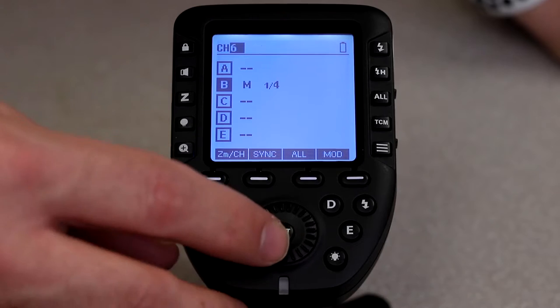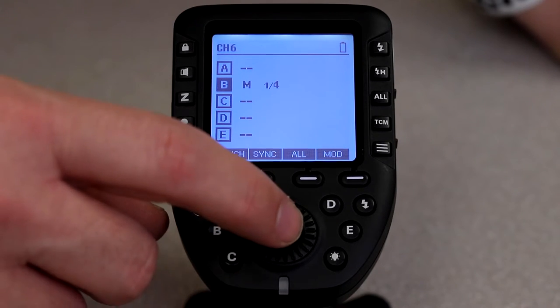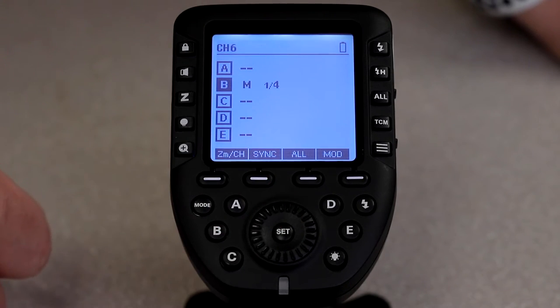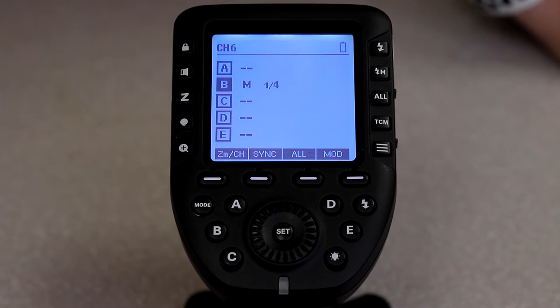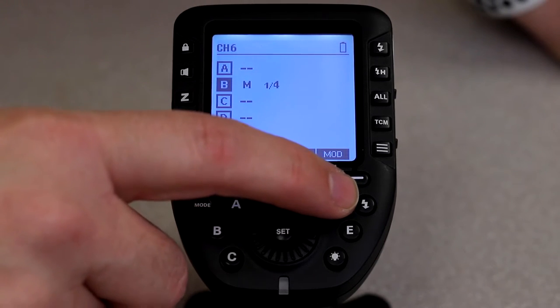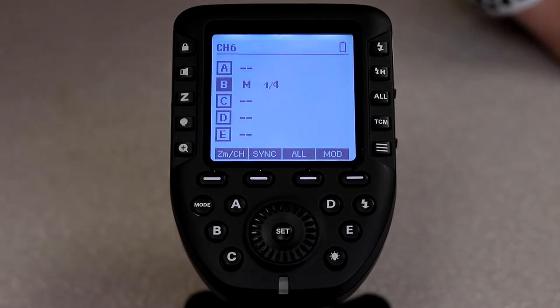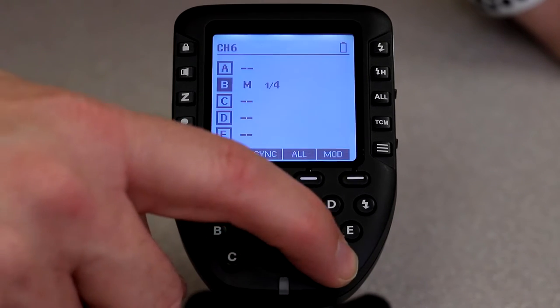Now I can go to channel 6, okay, and I can just hit set to key in my change. If I want to test my light to see if it's working, I can come over here to this little flash button and push that, and it will test it. If my flash pops, then I know that I'm on the proper group and channel.